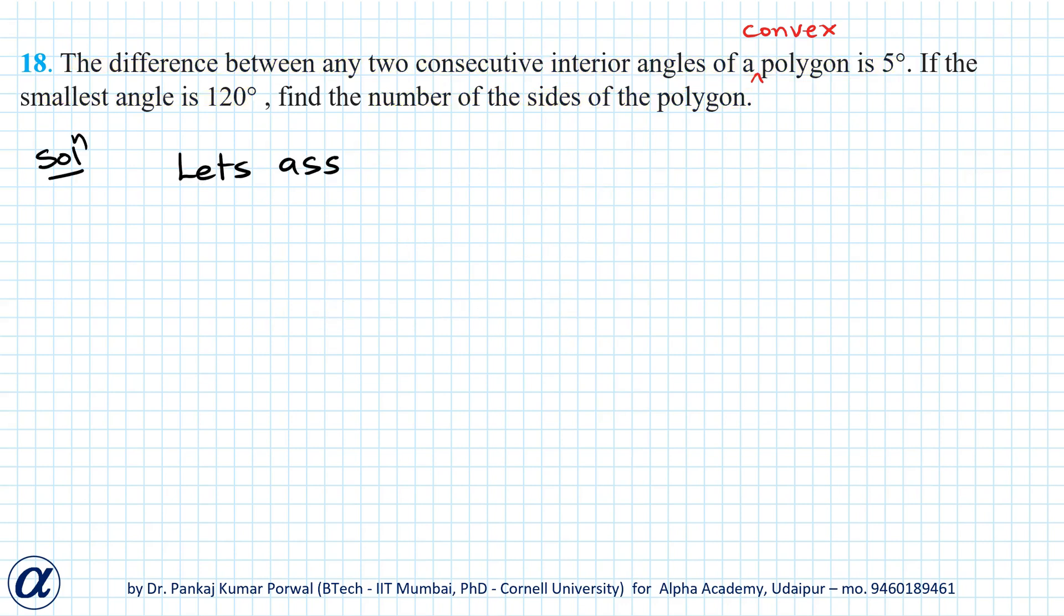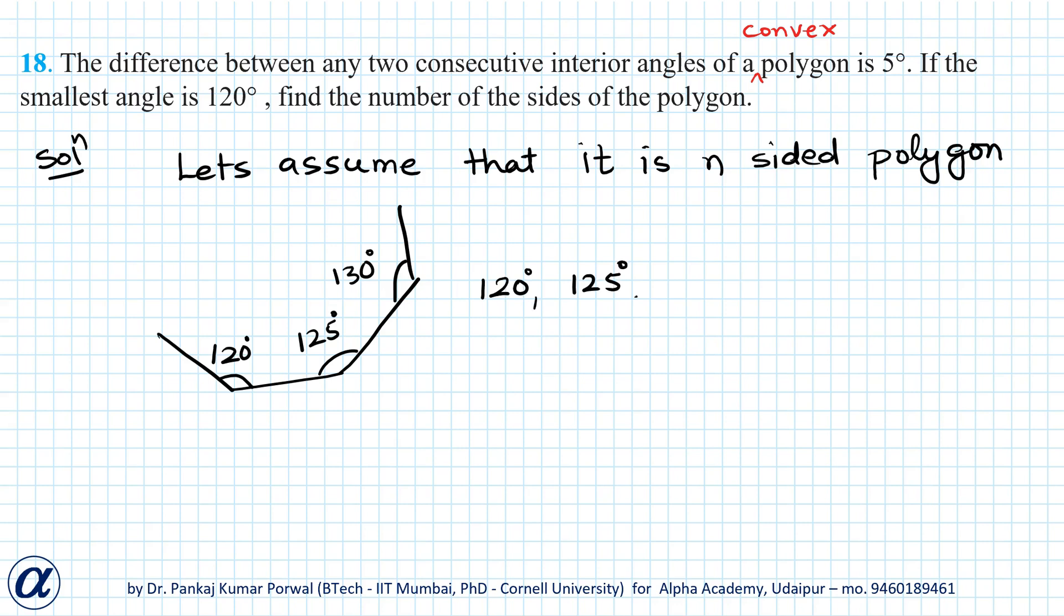Let's assume that it is an n-sided polygon. So it will have n interior angles, and we are given that the smallest angle is 120 and the difference between consecutive angles is 5 degrees. So if the first angle is 120 degrees, the next one will be 125 degrees, the next one will be 130 degrees, and so on. We have n angles, so there will be n terms in this series. If we look at this series, this is an AP with first term 120 degrees, common difference 5 degrees, and total number of terms is n.